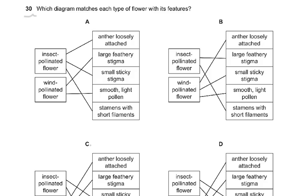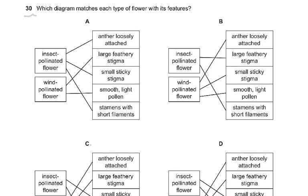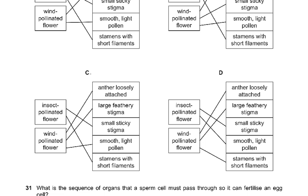Question number 30: Which diagram matches each type of flower with its features? They've given you insect-pollinated and wind-pollinated flowers. The answer is C. Wind-pollinated flowers have large feathery stigmas, anthers loosely attached, and smooth light pollen. Insect-pollinated flowers have a sticky stigma and stamens with short filaments. In wind-pollinated flowers the filament is pendulous and the anthers hang loosely outside. Either you know this chapter or you don't — there's no ambiguity.